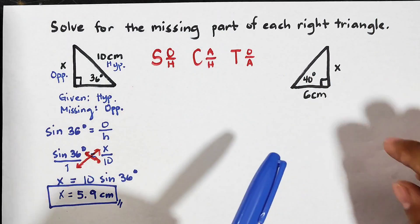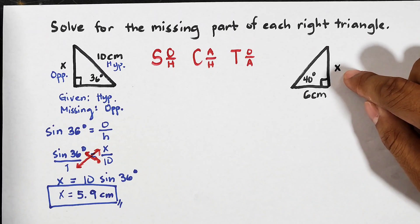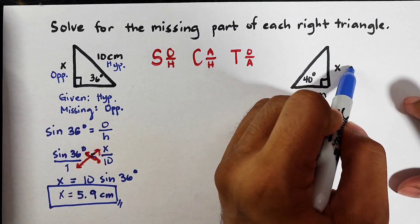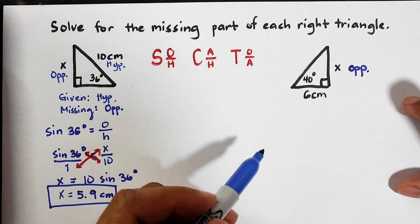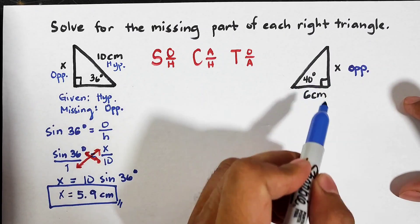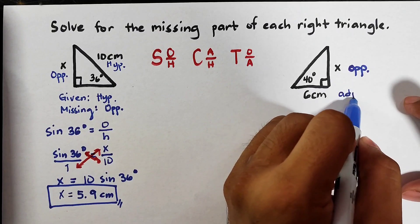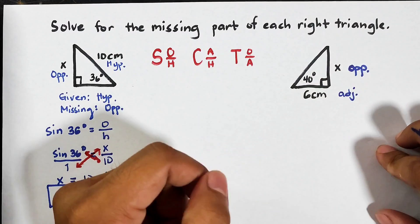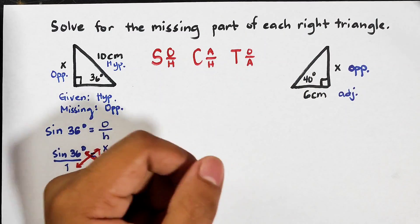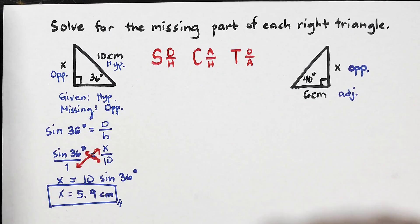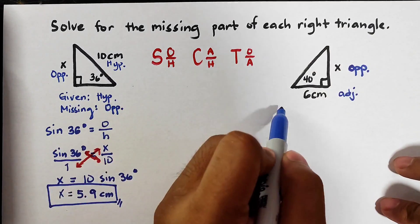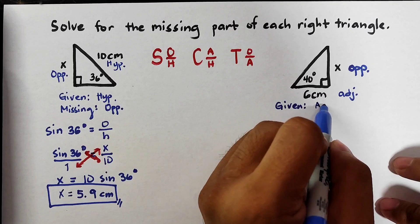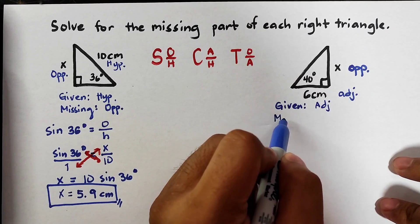Let's continue with problem number two. This is a right triangle with a missing side x. With respect to the 40-degree angle, x is the opposite side and the given side of 6 centimeters is the adjacent side. We need a ratio that has opposite and adjacent, so we will use TOA.